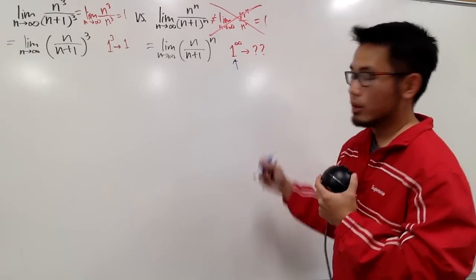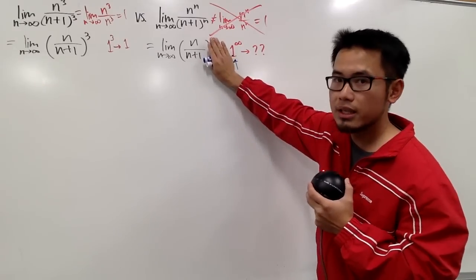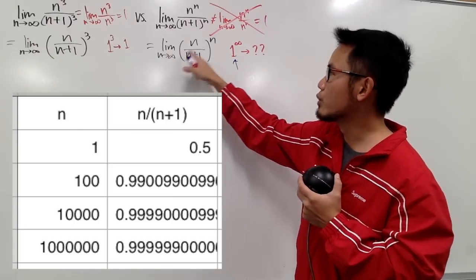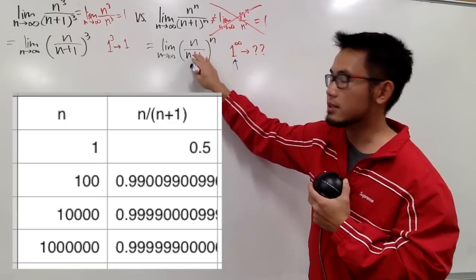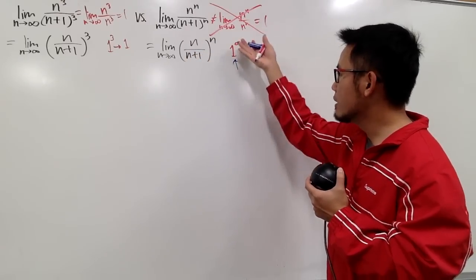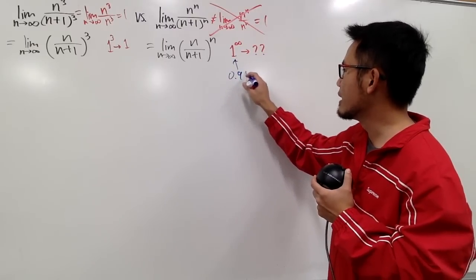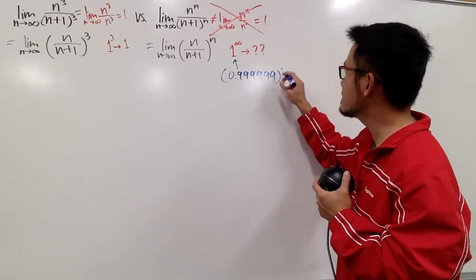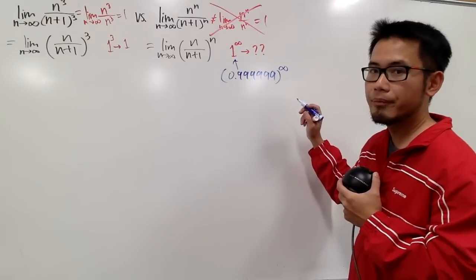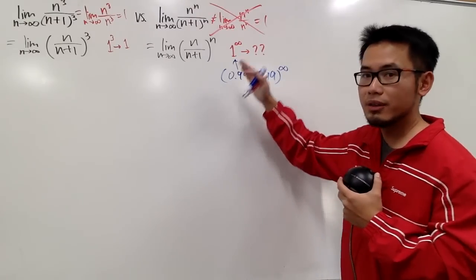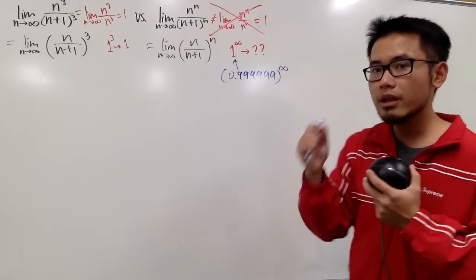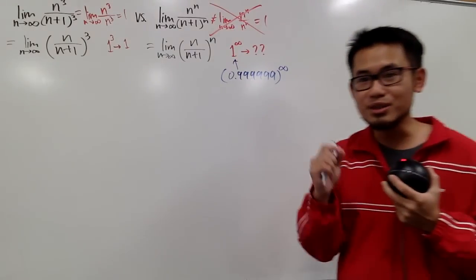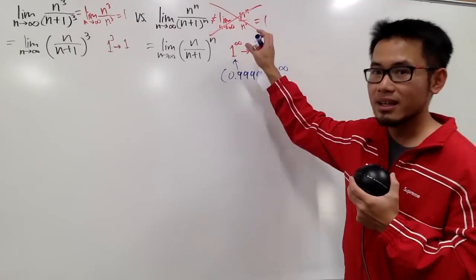Think about it: looking inside the expression, n/(n+1) is always going to be less than 1. You can plug in n = 1000 and verify. So this '1' actually represents something like 0.99999... with a lot of 9s, raised to an infinite power. And sometimes in a limit situation, the 1 may represent a number like 1.0000001 — just a number very close to 1. That's what the indeterminate form means.